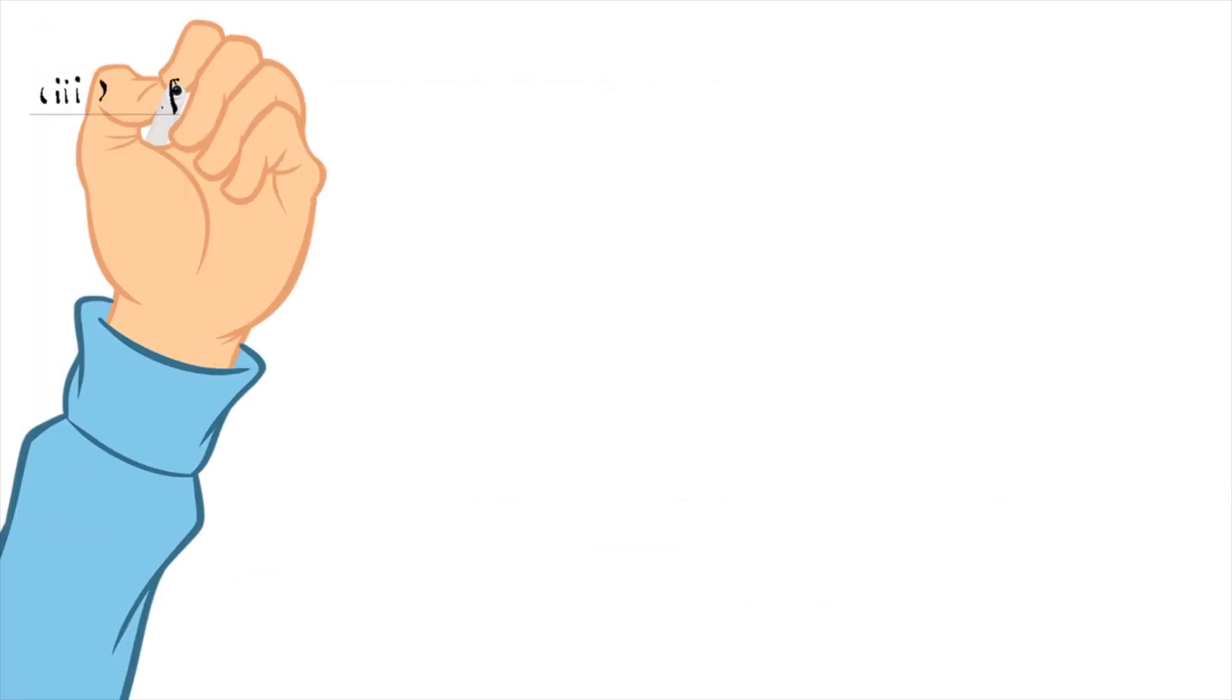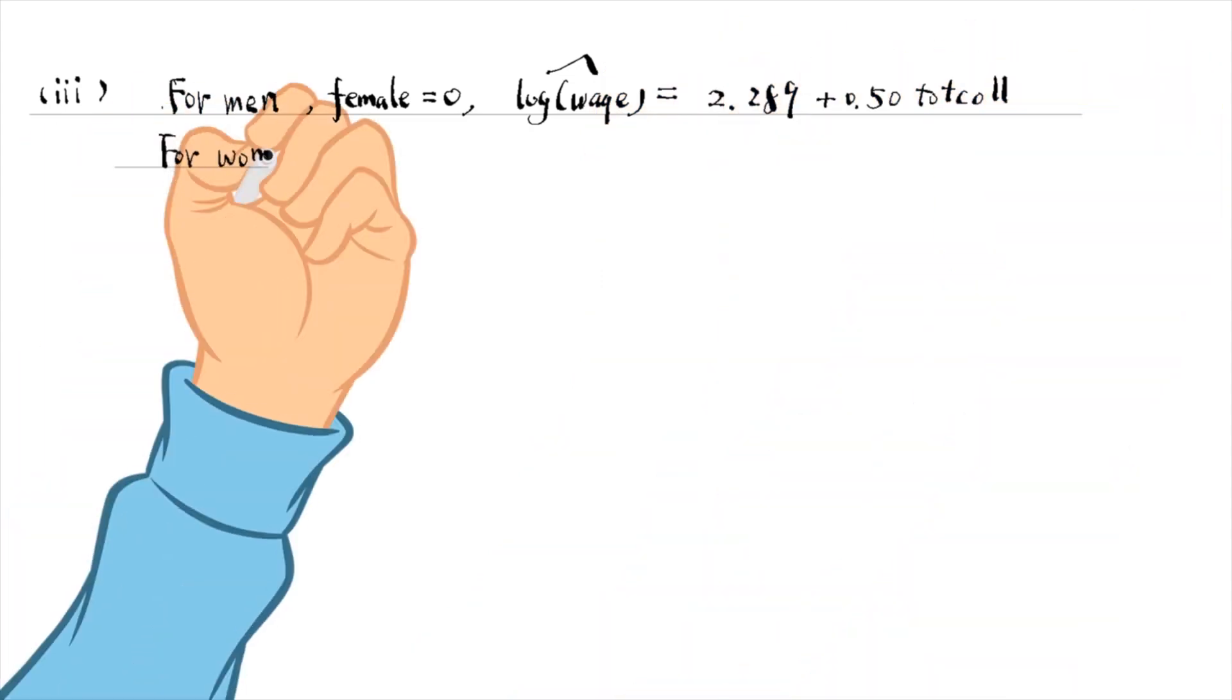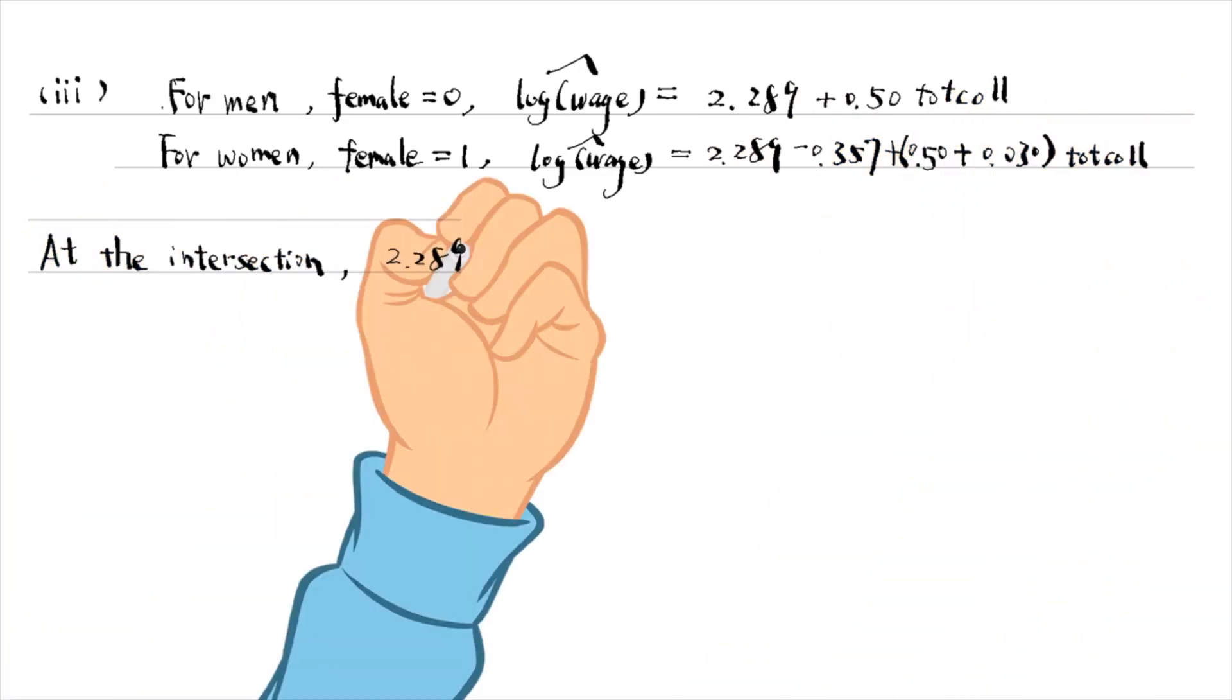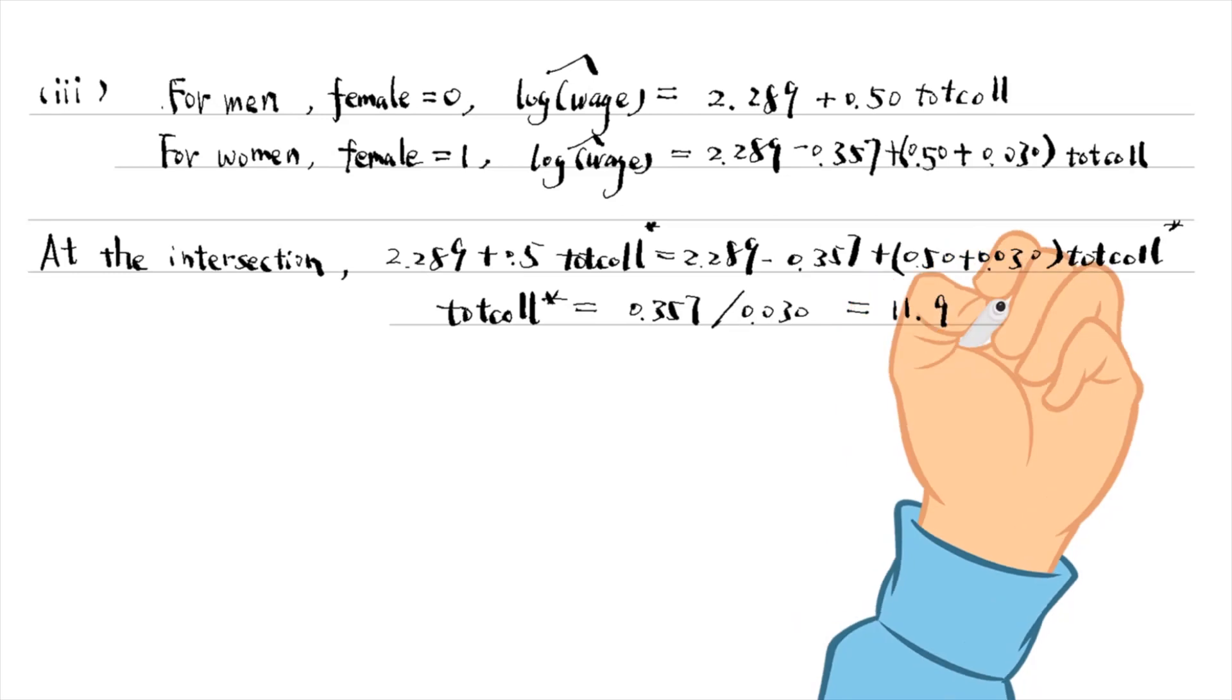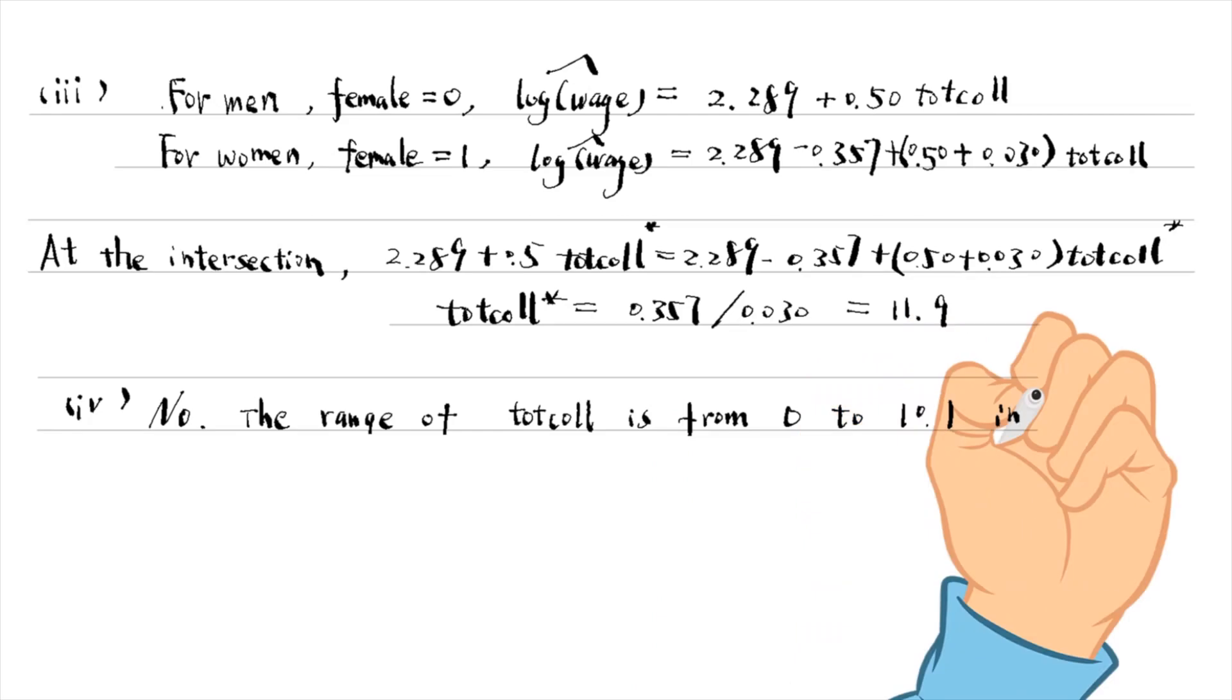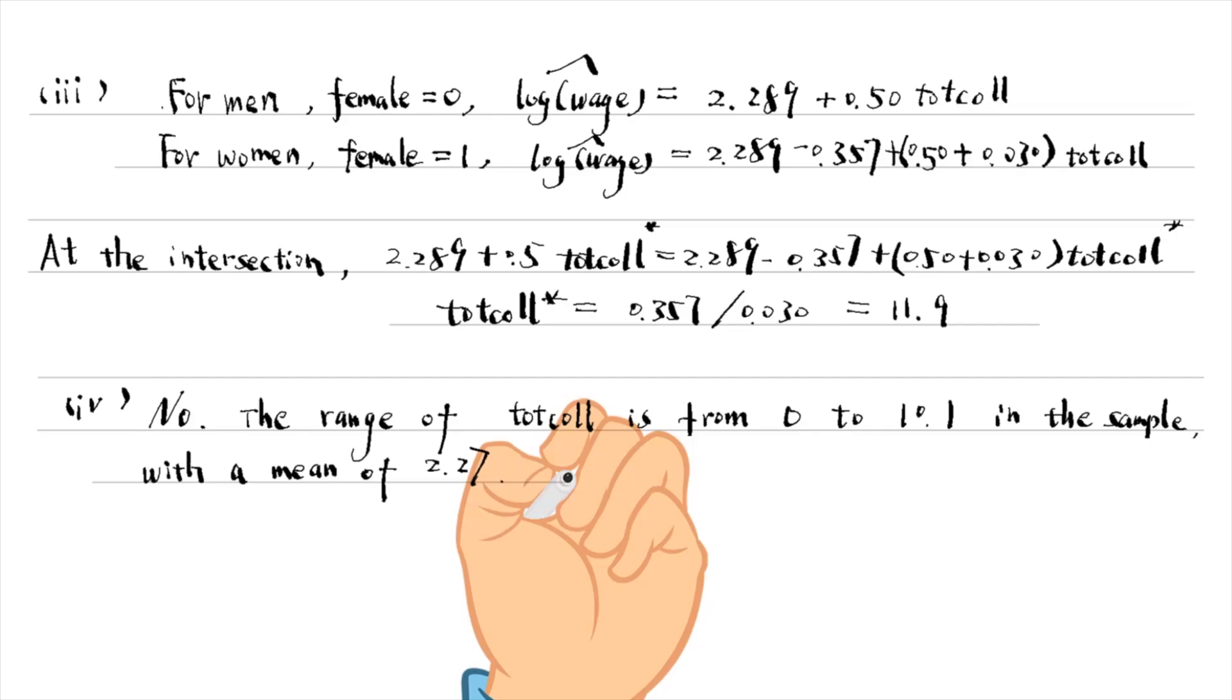In part 3, we can derive the intersection point from the beginning or use the result from the last part. The value of total college credit is 11.9 when the predicted wages are the same for men and women. The answer to the last question is no. The range of total college is from 0 to 10.1 in the sample, with a mean of 2.27.